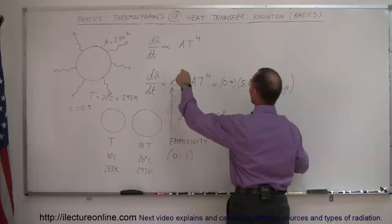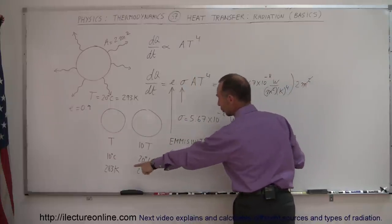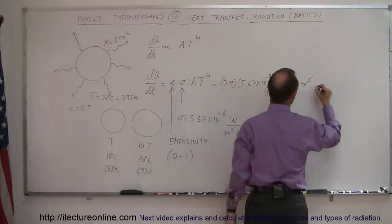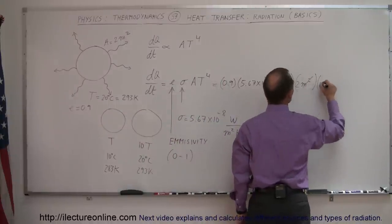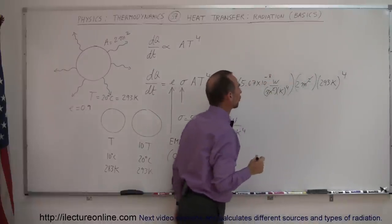Alright, now we have the cross-sectional area of 2 meters squared. So, you can see that meter squared cancels out. And a temperature of 293, it's right here. So, 293 Kelvin, and that would have to be raised to the fourth power.